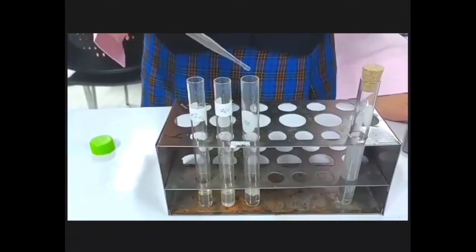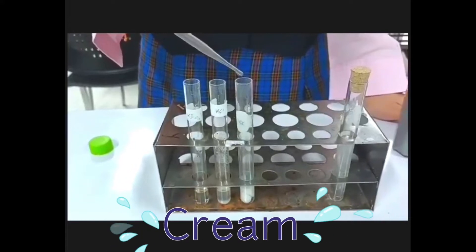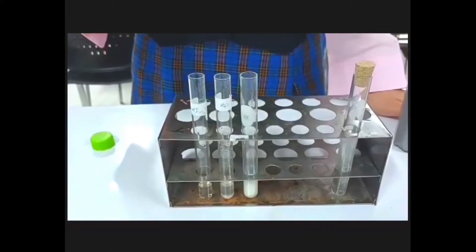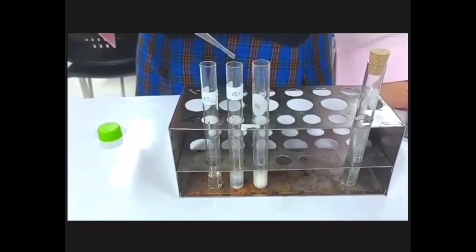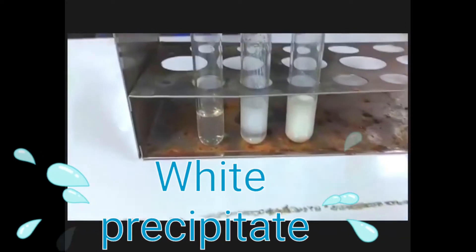So we're going to add some silver nitrate to the first one. We can see a cream color solution form. It means the bromide is present. And we add silver nitrate to the second one, which is chloride. It forms a white color precipitate.